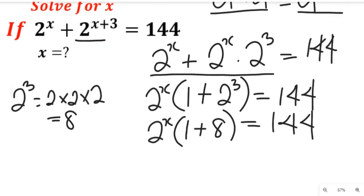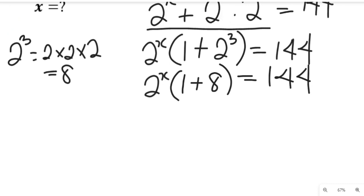Now what do we do next? We have to simplify this. 2 to the power of x multiplied by 9 will be equal to 144.